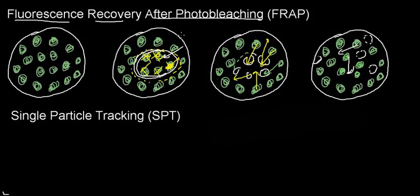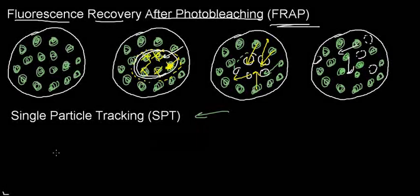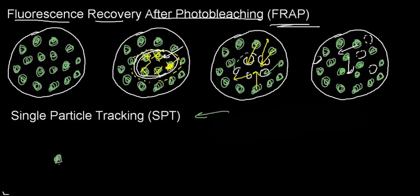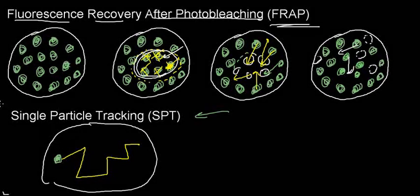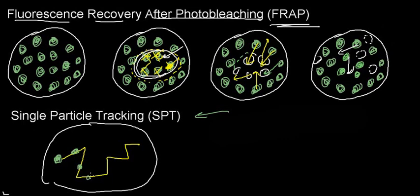This is FRAP — fluorescence recovery after photobleaching — a good way to measure lateral diffusion and support the idea that membrane proteins are free to diffuse. Additionally, single particle tracking is a simpler approach: label one specific protein with a fluorescent dye, then observe under the microscope as you watch that fluorescent signal move around the plasma membrane, tracing the route that individual protein takes.